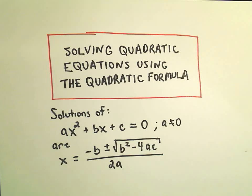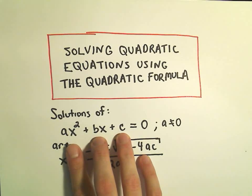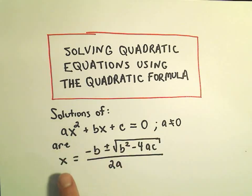Alright, in this video I'm going to do an example of solving a quadratic equation using the quadratic formula. And the idea again is if you have an equation of form ax squared plus bx plus c equals zero, where a is not zero, we can find the solutions to this by using the quadratic formula, which is negative b plus or minus the square root of b squared minus 4ac over 2a.